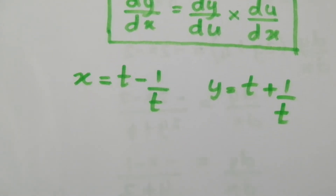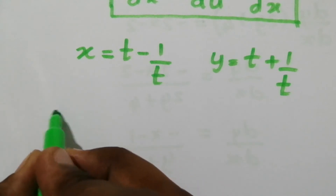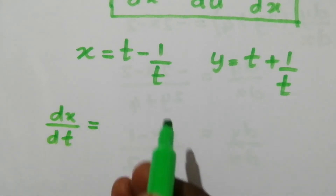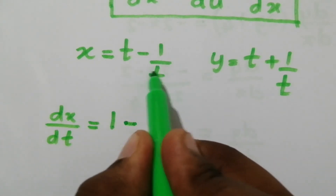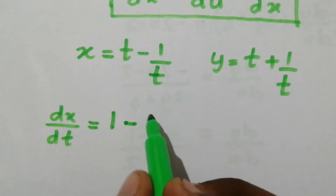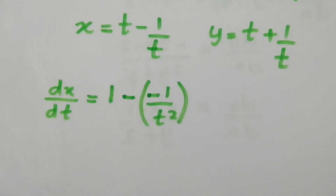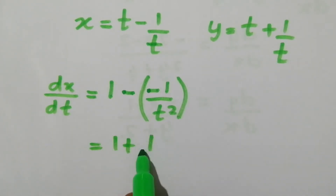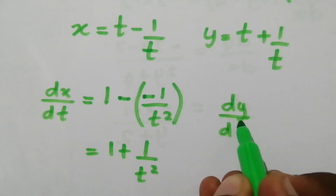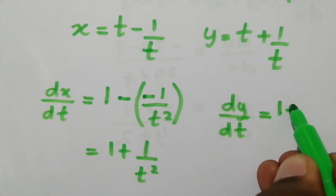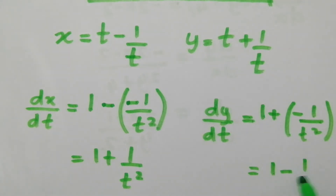Now let us see how to differentiate such a parametric function. The differentiation of x with respect to t, dx/dt, is the derivative of t which is 1, minus the derivative of 1/t which is t to the power −1, giving −1/t². So dx/dt = 1 + 1/t². Similarly, dy/dt = 1 − 1/t².